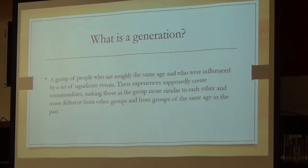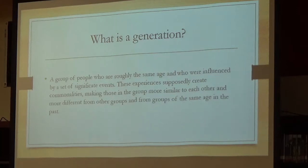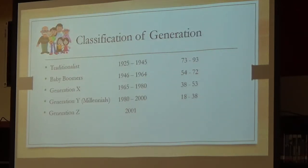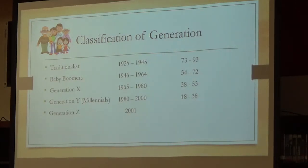Something interesting is happening right now — there are five generations living side by side. This can be quite challenging, but it can work once you understand the different generations. The five generations living side by side are Traditionalists, Baby Boomers, Generation X, Millennials, and Generation Z.